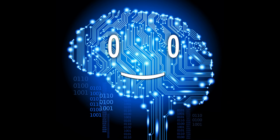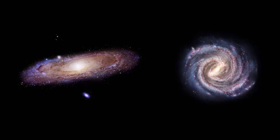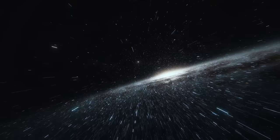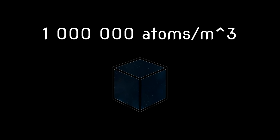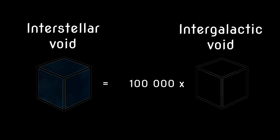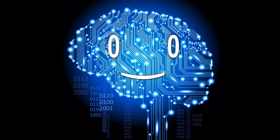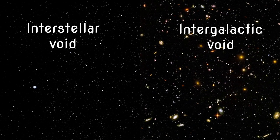That should give you a rough idea about how far away galaxies are from one another. If you zoom inside a galaxy and look at the interstellar void in between stars, you'll find that it contains 1 million atoms per cubic meter — roughly 100,000 times denser than intergalactic space — even though they both look equally empty at first sight.